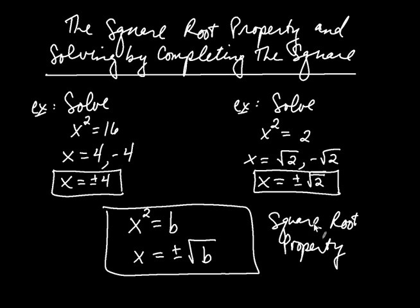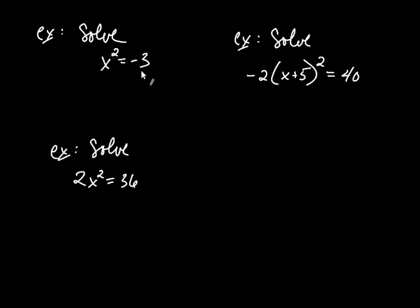It's called the square root property because it tells us how to deal with quadratics. You simply take plus or minus the square root of the right-hand side once you've isolated the quantity that's being squared. Let's try another one. We're asked to solve x squared is equal to negative 3.